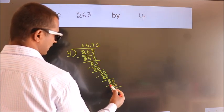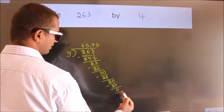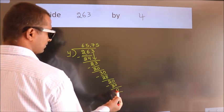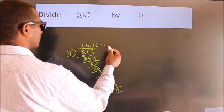Now we subtract. We get 0. We got remainder 0, so this is our quotient.